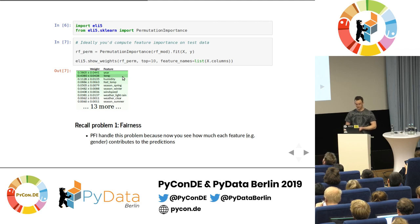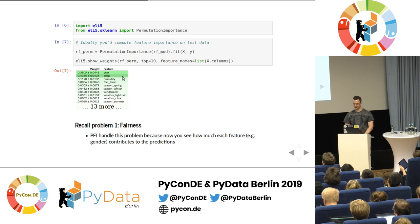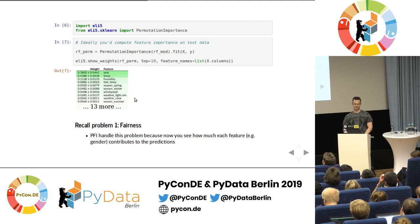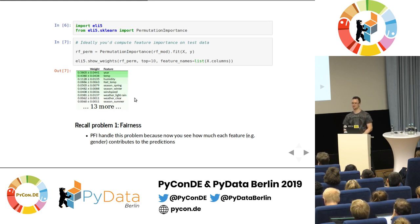Looking back at the first problem — the gender bias in Amazon's recruiting model — you can see that PFI can help address this. If you see gender appearing very highly in the importance list, you have an indicator that it's time to look more closely and retrain your model. First problem solved.